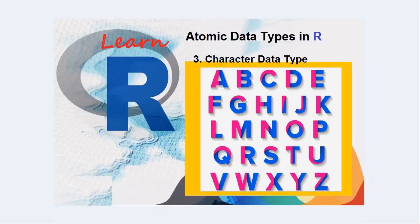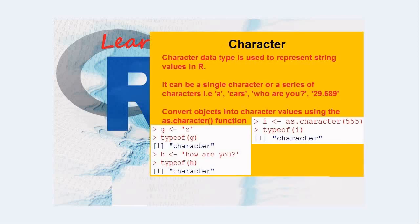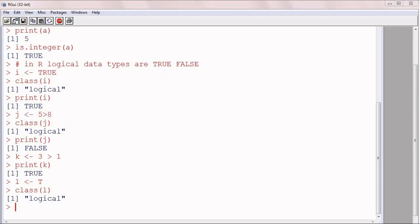The next data type is character data type, which is used to store single characters or a string of characters in R. Character data type is used to represent string values, and we can convert other objects into characters with the help of as.character function.